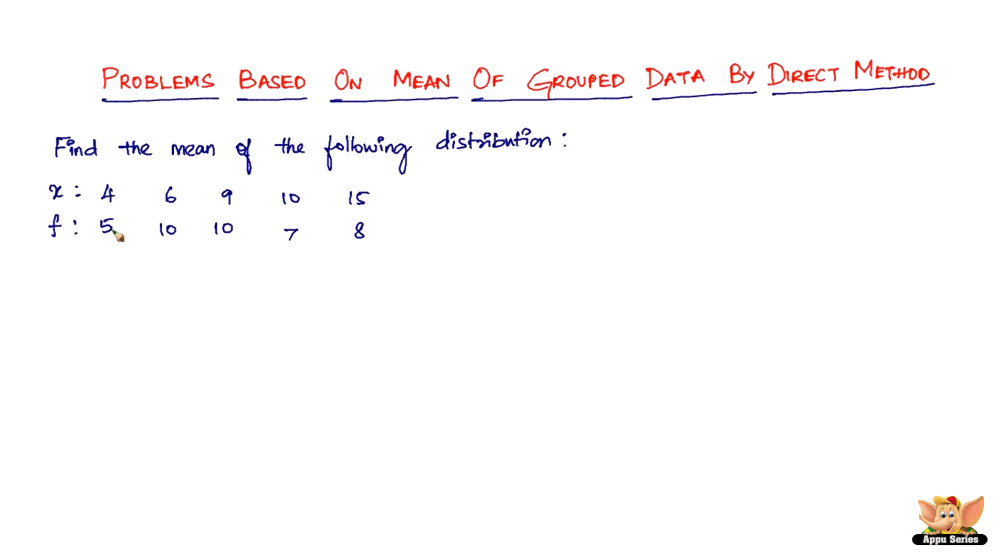The frequency of 4 is 5, the frequency of 6 is 10, meaning 4 occurred 5 times, 6 occurred 10 times, 9 occurred 10 times. We don't know what exactly this data is, but we need to understand it that way.